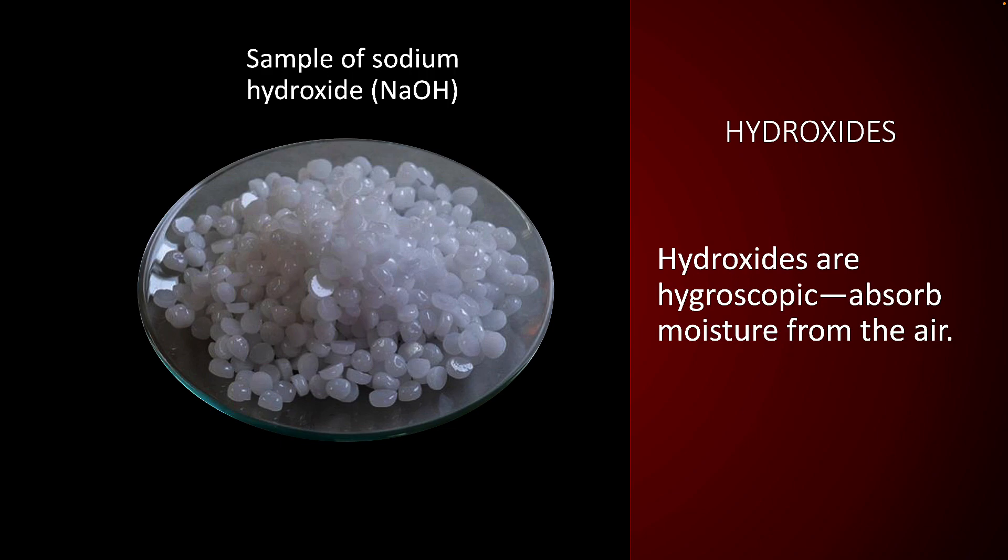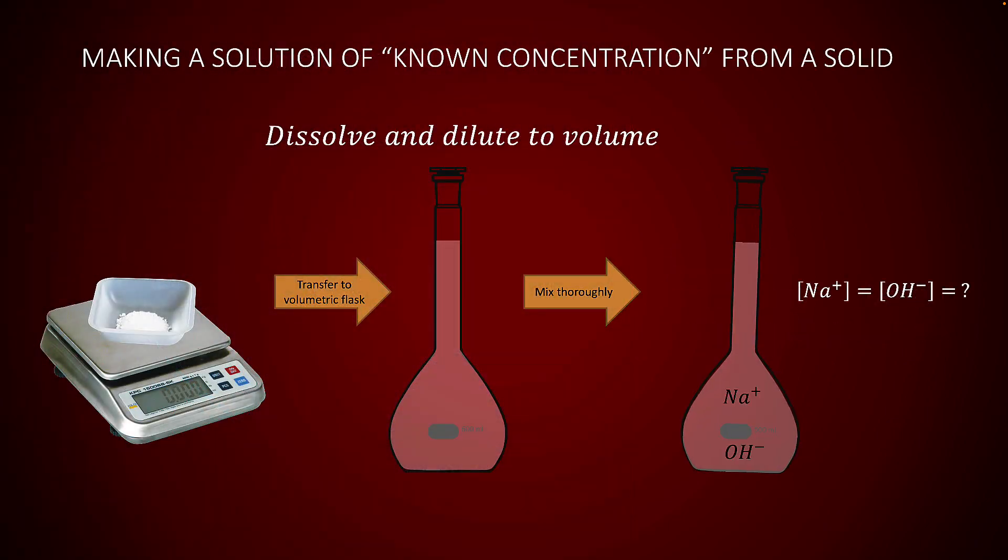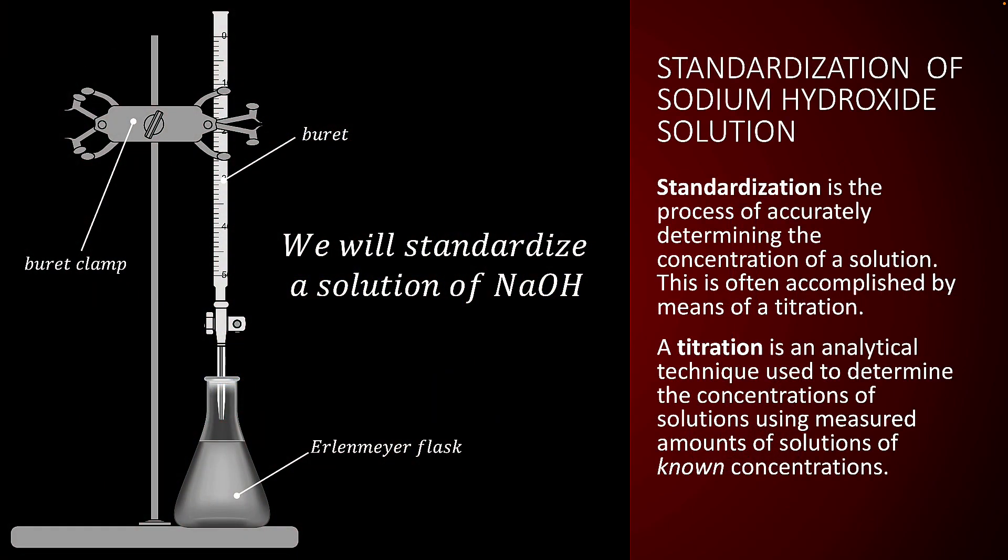Many ionic compounds are hygroscopic, which means they absorb moisture from the air. Sodium hydroxide is particularly hygroscopic, even dissolving in the water it absorbs from the air. This property is known as deliquescence. Because sodium hydroxide is hygroscopic, even with careful mass and volume measurements, there's still uncertainty in the concentrations of solutions made with it. For this reason, standardization of hydroxide solutions is often necessary to determine the precise concentration.